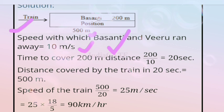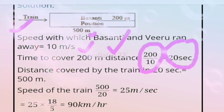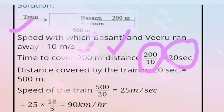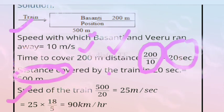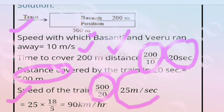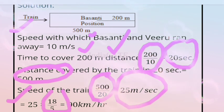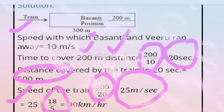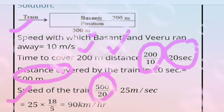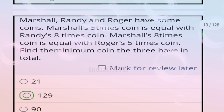Solution: Vasanti's position is 200 meters from one end. Speed is 10 m/s. Time to cover 200 meters = 200/10 = 20 seconds. Distance covered by the train in 20 seconds = 500 meters. Speed of train = 500/20 = 25 m/s. Converting: 25 × 18/5 = 90 km/h. The answer is 90 km/h.